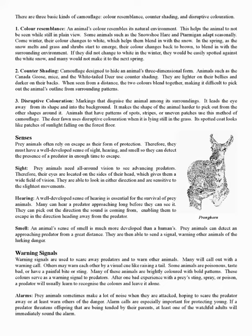Counter shading is camouflage designed to hide an animal's three-dimensional form. Animals such as the Canada goose, mice, and the white-tailed deer use counter shading. They are lighter on their bellies and darker on their backs. When seen from a distance, the two colors blend together, making it difficult to pick out the animal's outline from surrounding patterns.